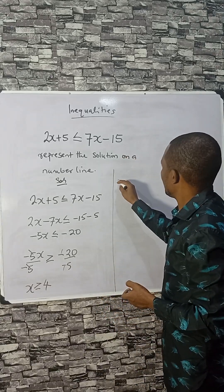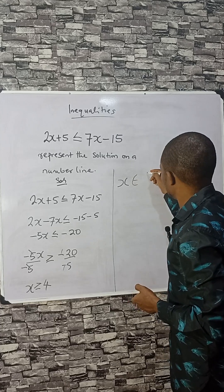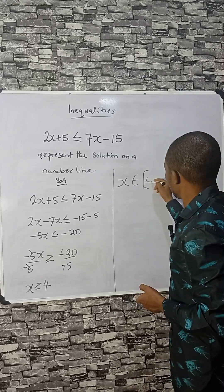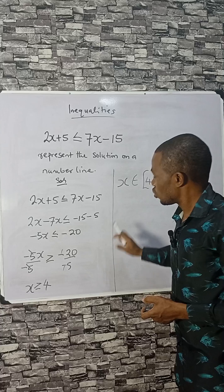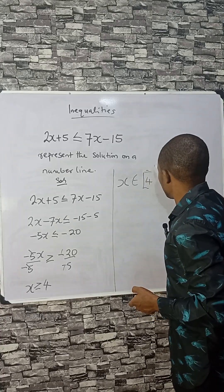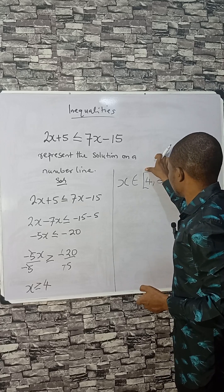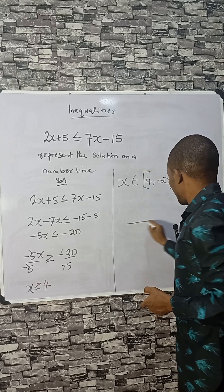This represents the values of x. The number 4 is a member of the set, and the solution extends from 4 to positive infinity, written as [4, ∞). Now we'll represent this on a number line.